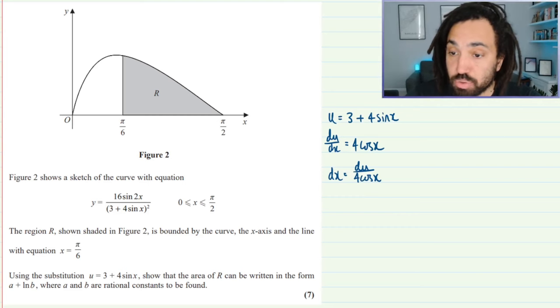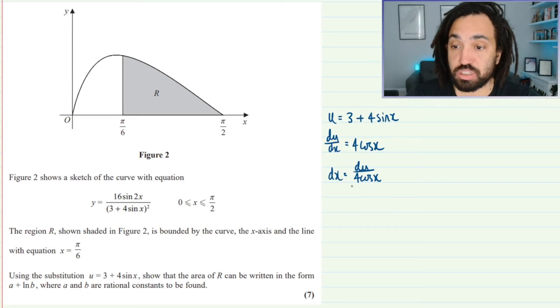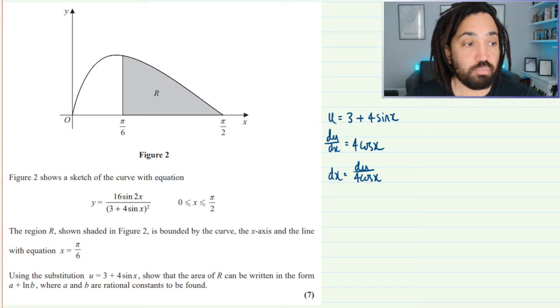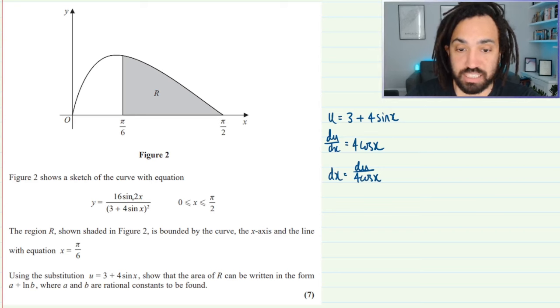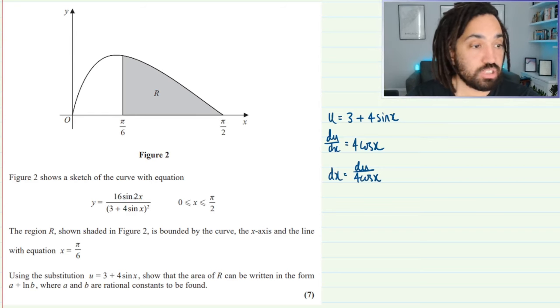Now some of the times you would want to make sure that dx was solely in terms of u but here I think we're going to be fine because I'm suspecting that there's going to be a cos which is going to be on the top which is going to cancel.